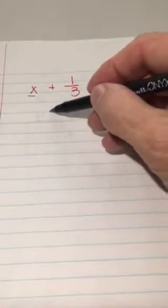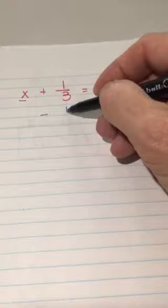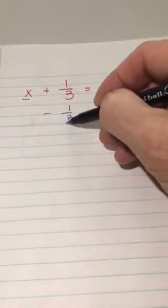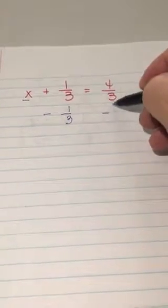one-third is being added to x. So, to isolate x, we do the opposite operation, which is subtraction, on both sides of the equals. We subtract one-third over here, and we subtract one-third over here.